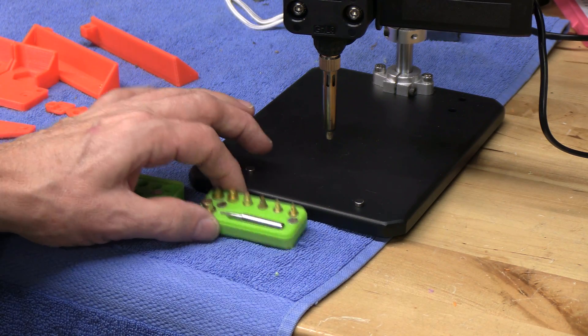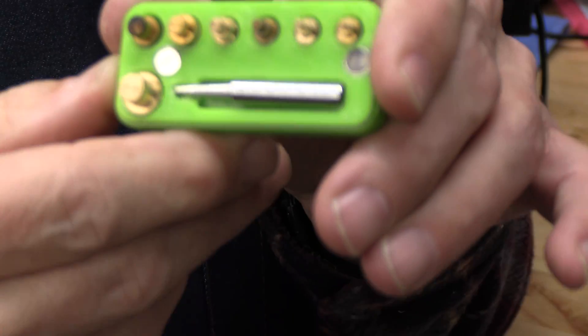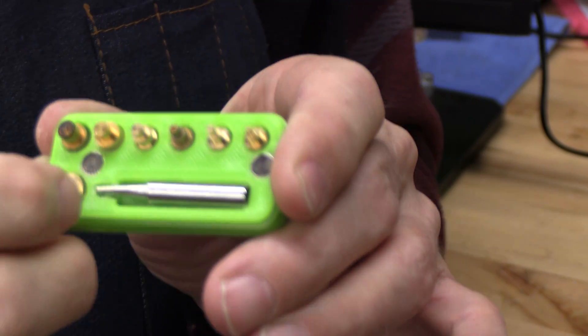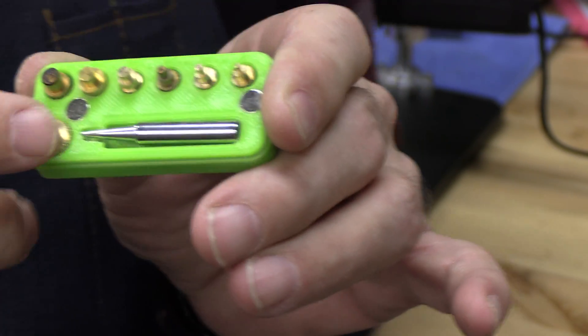First thing we need to do is select the correct head. The heat set insert kit comes with all these different diameters. We will use a six by three millimeter magnet, and this head fits the best.